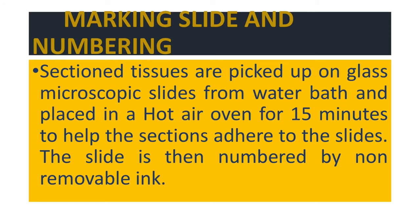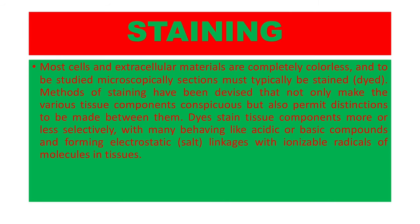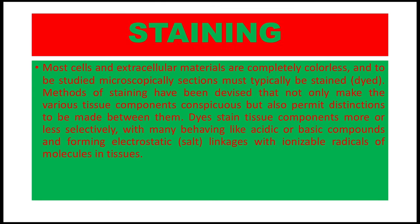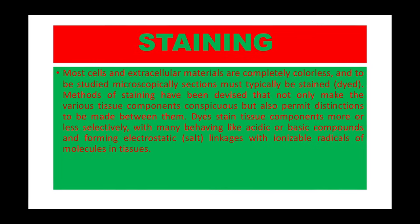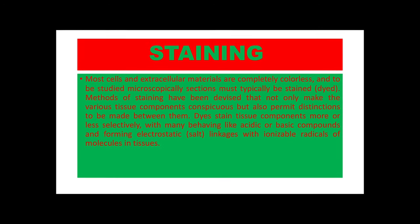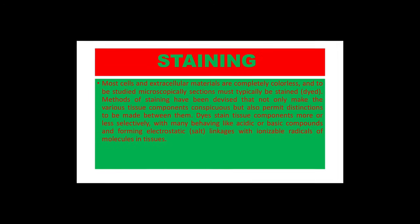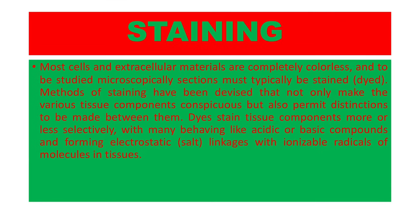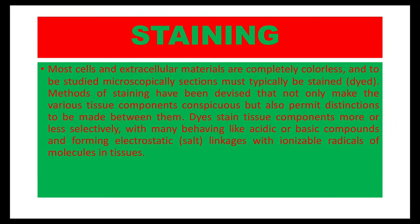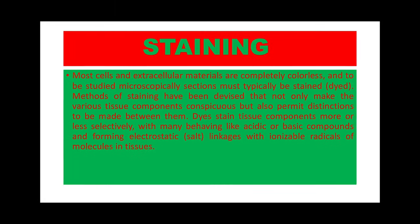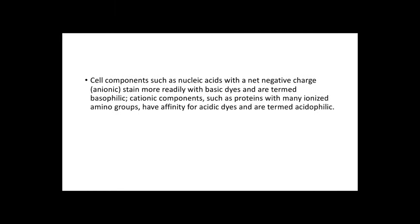The next stage is staining. Most cells and extracellular materials are completely colorless, so sections must typically be stained — that is, dyed — for microscopic study. Staining methods have been devised that not only make various tissue components conspicuous but also permit distinctions between them, staining tissue components more or less selectively. Many components behave like acidic or basic compounds, forming electrostatic linkages with ionizable radicals of molecules in tissues.